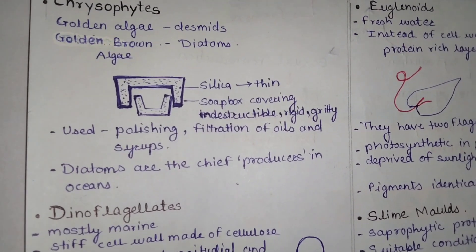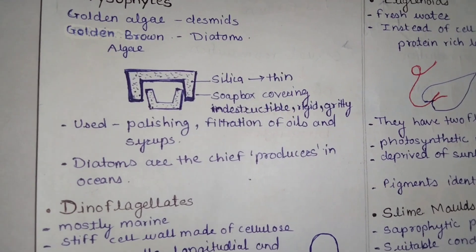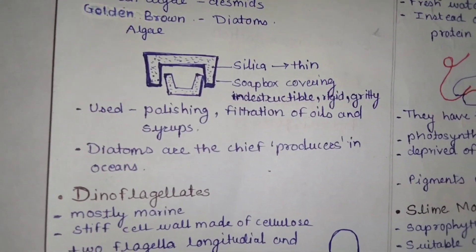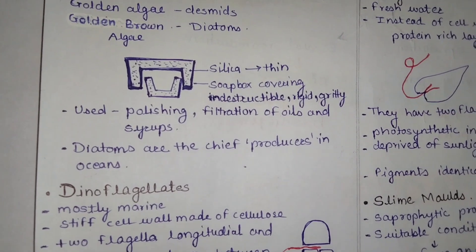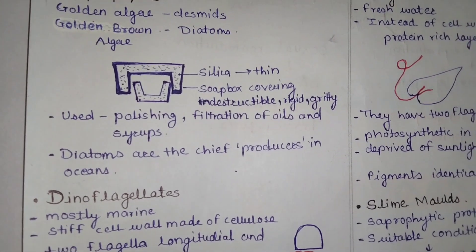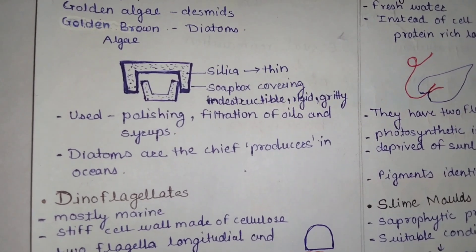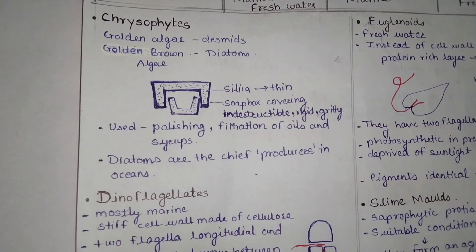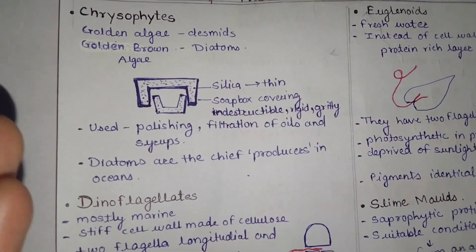Diatoms are the chief producers in the ocean. This is a most important question. That concludes the discussion on Chrysophytes.